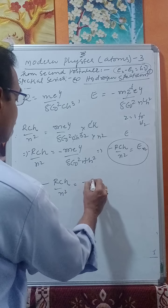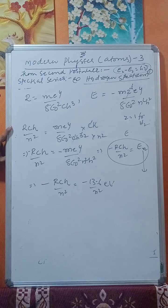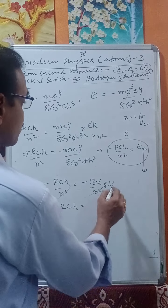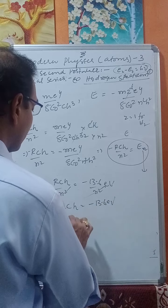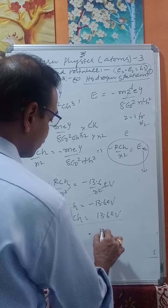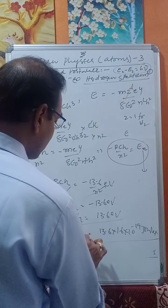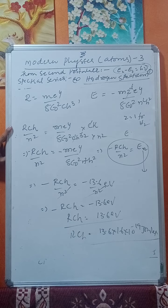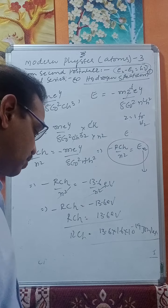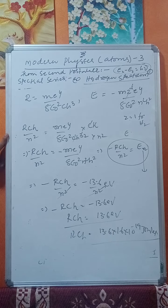Therefore, the energy in the nth orbit is En equals minus R·c·h divided by n². Since En equals minus 13.6/n² electron volts, it follows that R·c·h equals 13.6 eV, which equals 13.6 × 1.6×10⁻¹⁹ joules. Now let us see the different series of spectral lines.